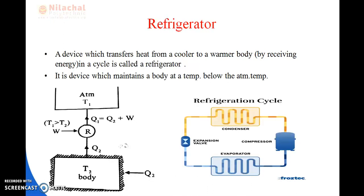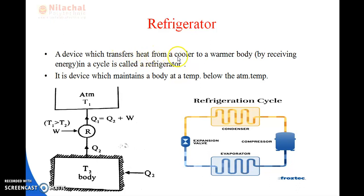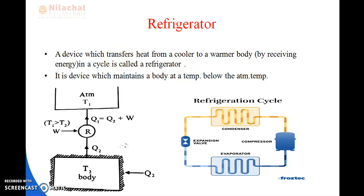The next device following the Clausius statement is the refrigerator, which is our main subject. A device which transfers heat from a cooler body to a warmer body in a cycle is called a refrigerator. The definition is the same as the heat pump, but what is the difference between the refrigerator and the heat pump? Both follow the Clausius statement, but there is a key difference.